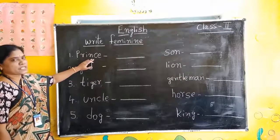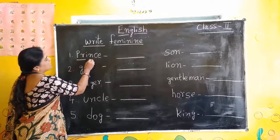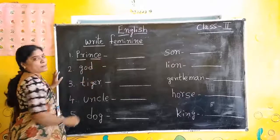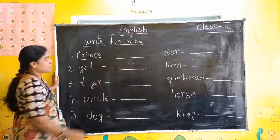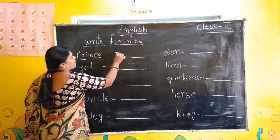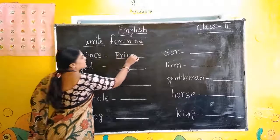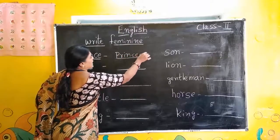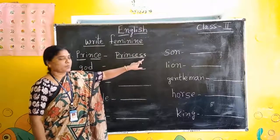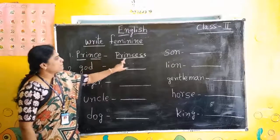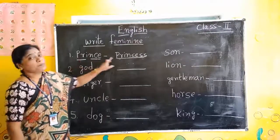Prince: P-R-I-N-C-E, Prince. What we have to write? Princess: P-R-I-N-C-E-S-S. Here Prince is there, we are adding S-S. Prince — Princess.